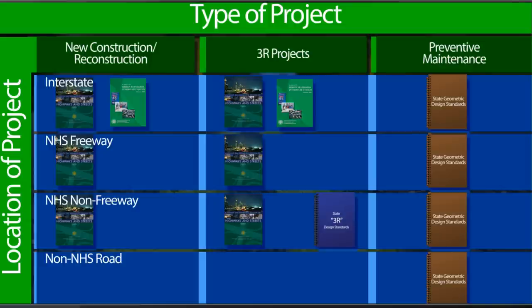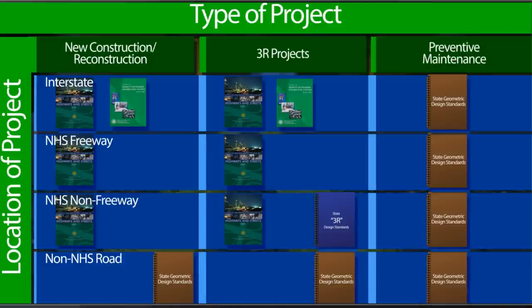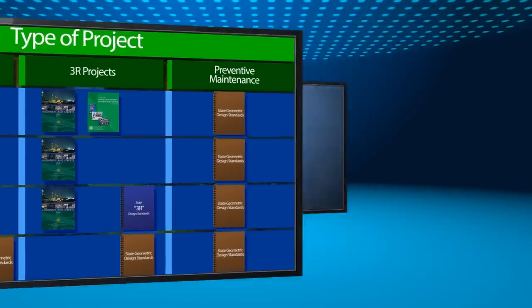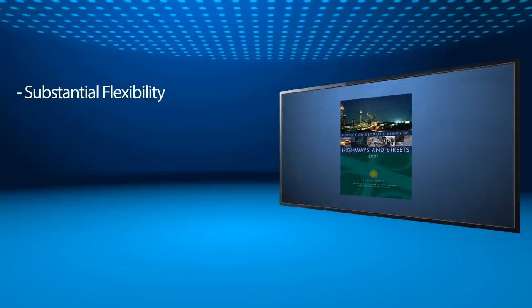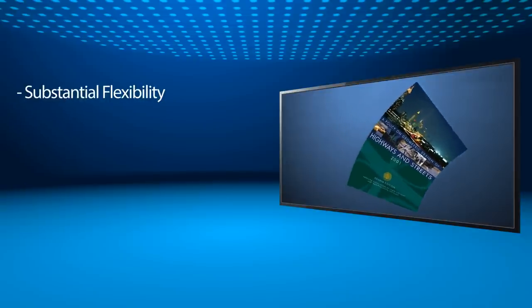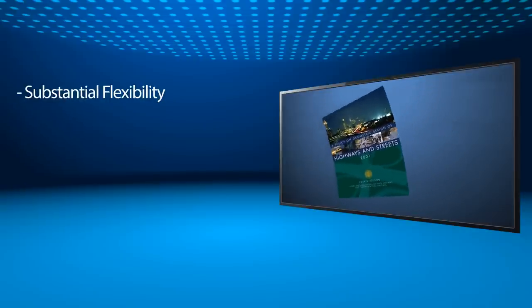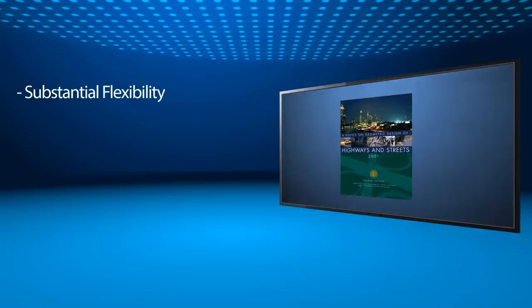If you are responsible for any type of project located off the NHS that uses federal aid funds, you must adhere to applicable laws and design requirements required by your state. The design criteria found in the AASHTO Green Book provide substantial flexibility to address specific conditions encountered on projects.